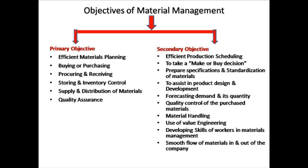The next secondary objective is to assist in product design and development. Next is forecasting demand and its quantity. Sometimes we will not know when materials are getting used, so companies cannot wait until new materials arrive. They will forecast how much material they have and based on this, forecast how much will be required and when — and these things can be done only when material management is in place.